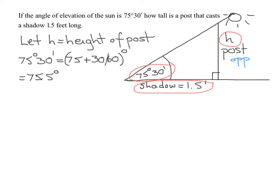And which trig function relates opposite and adjacent? That's tangent of 75.5 degrees equals opposite over adjacent. So the tangent of 75.5 degrees is equal to my opposite side, which I don't know - that's h. The adjacent is 1.5.